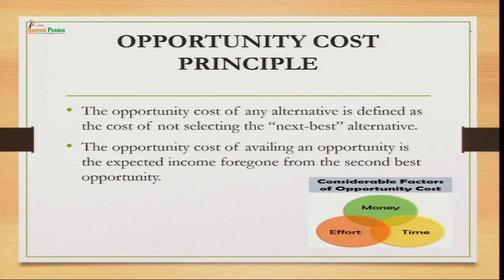The second-best alternative which you sacrifice — because you have chosen the first best — its cost is considered the opportunity cost. Basically, it was the opportunity available to us, but since we sacrificed it, it becomes the cost. The opportunity cost of any alternative is defined as the cost of not selecting the next best alternative.